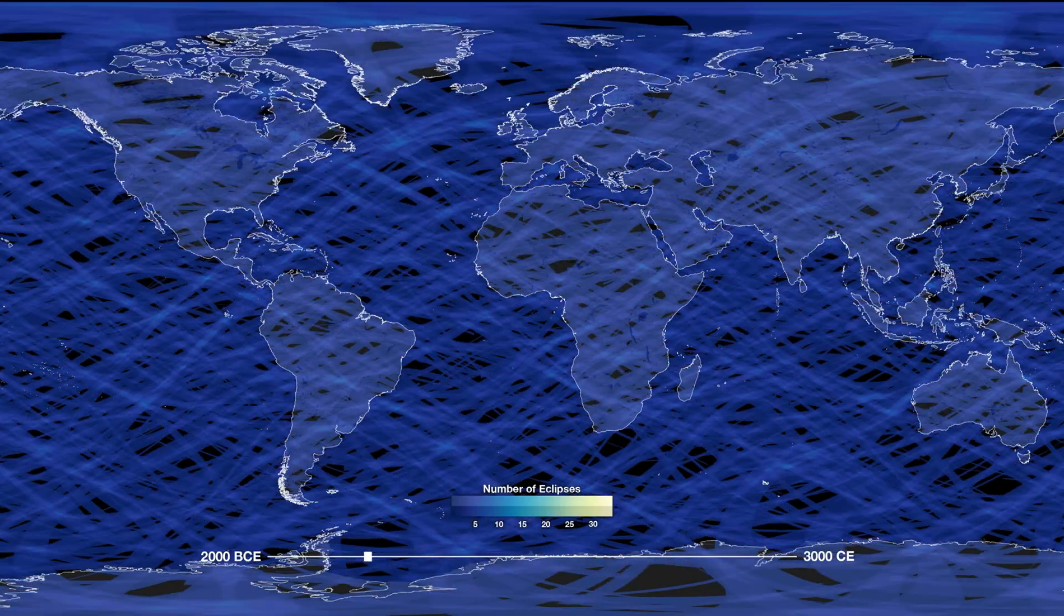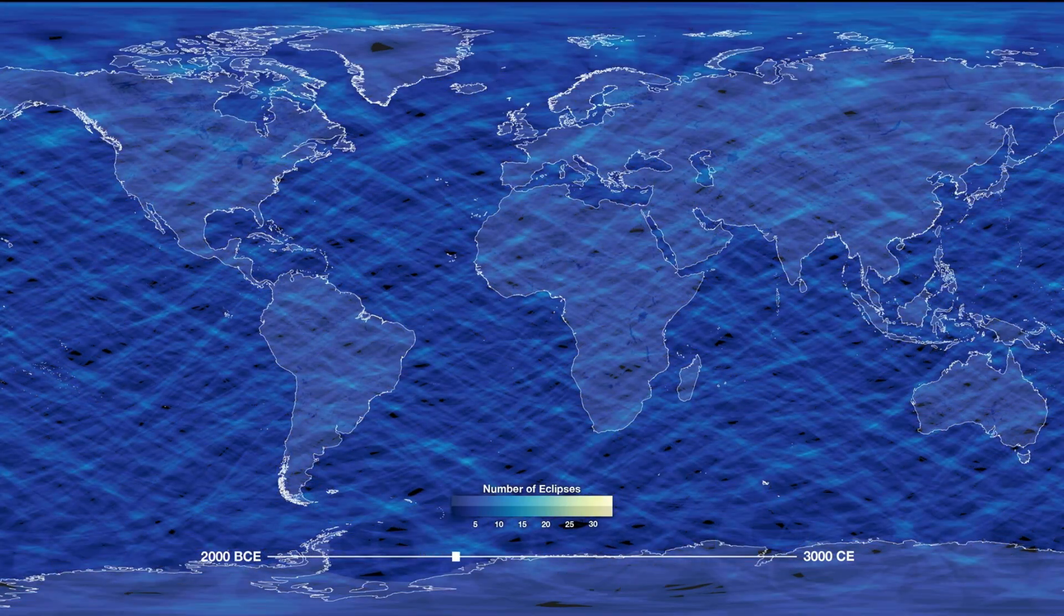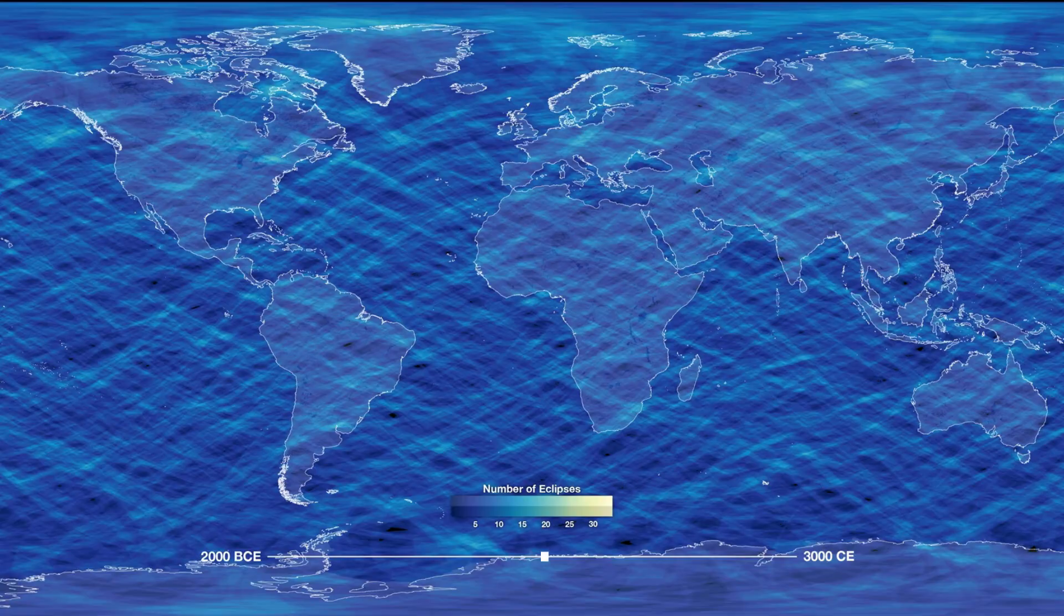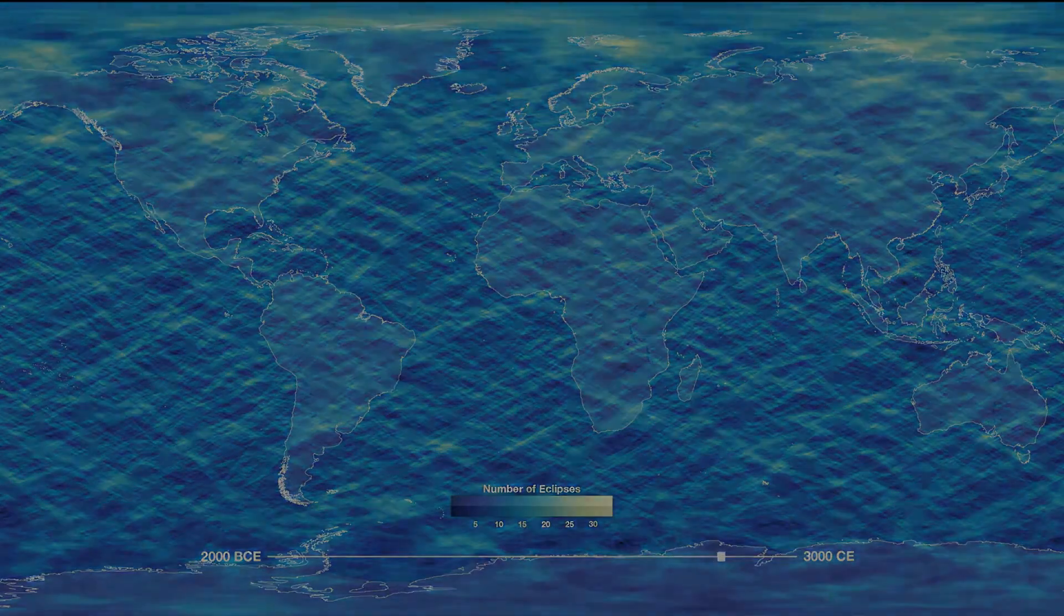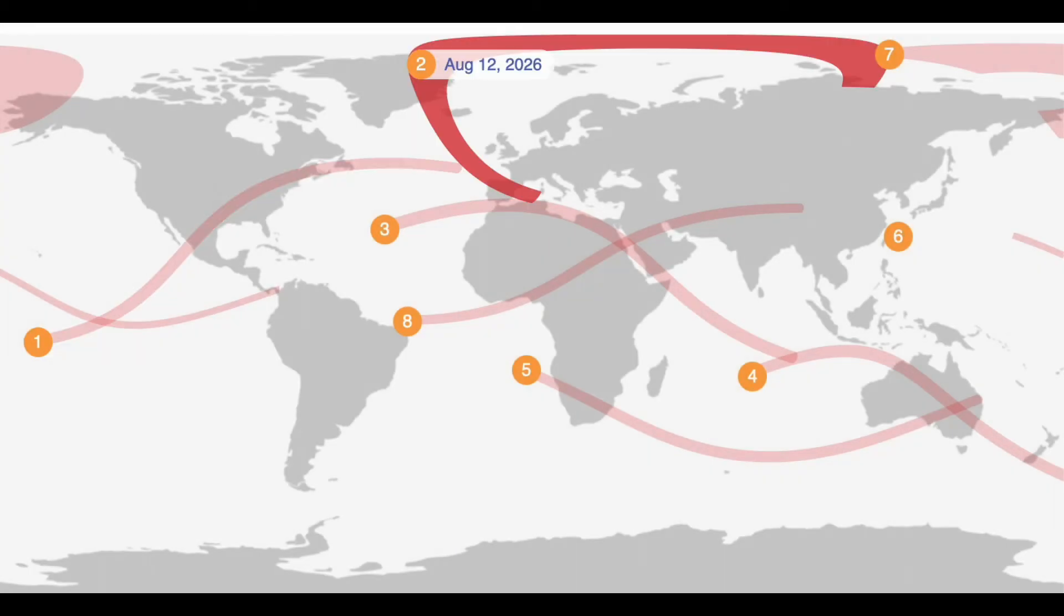Furthermore, each eclipse has a unique path across the surface, so seeing one where you live is even much less frequent. Here are some of the upcoming eclipses and the paths of the shadows where they will be visible from on Earth's surface.